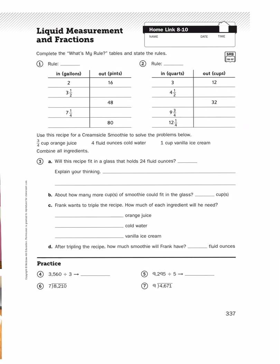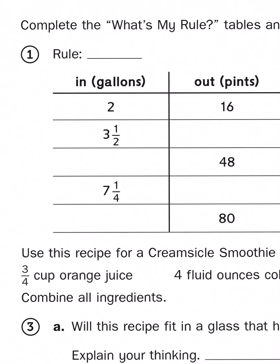Problems 1 and 2 ask you to complete the what's my rule table and state the rules. Well, number 1, we want to know what the rule is if you have 2 gallons and you come out with 16 pints. Well, if 2 gallons equals 16 pints, that means I have to do something to the number 2 to get 16. Now, this feels like a multiplication problem to me. What times 2 gives me 16? Well, that is pretty simple.